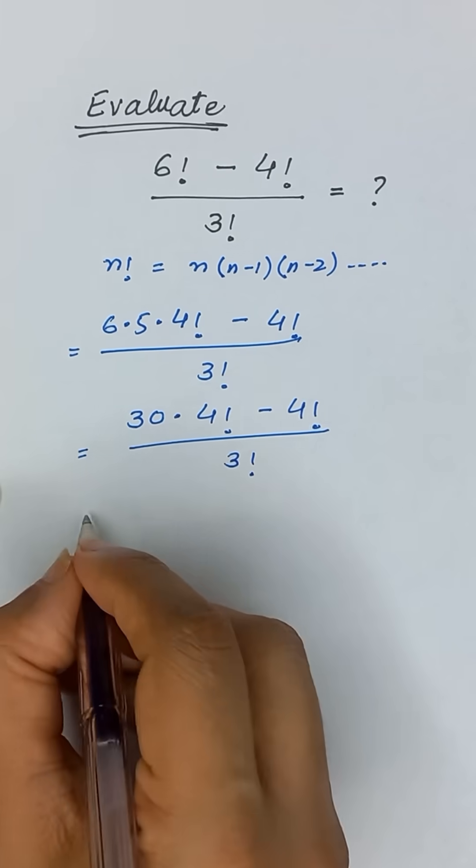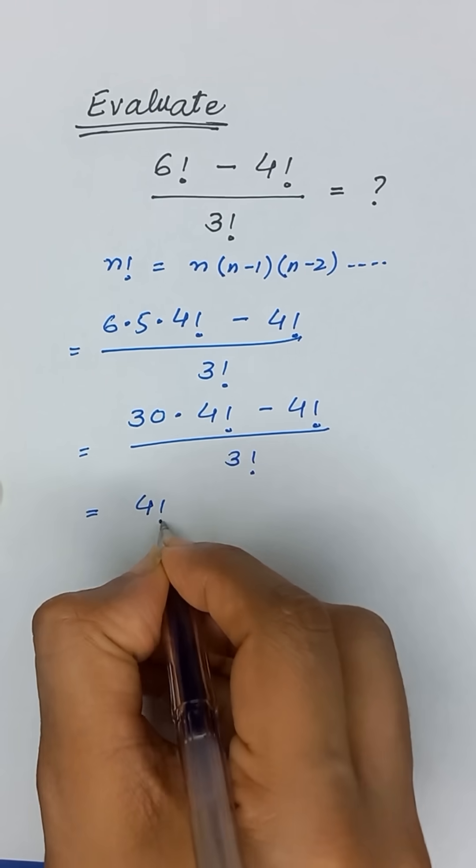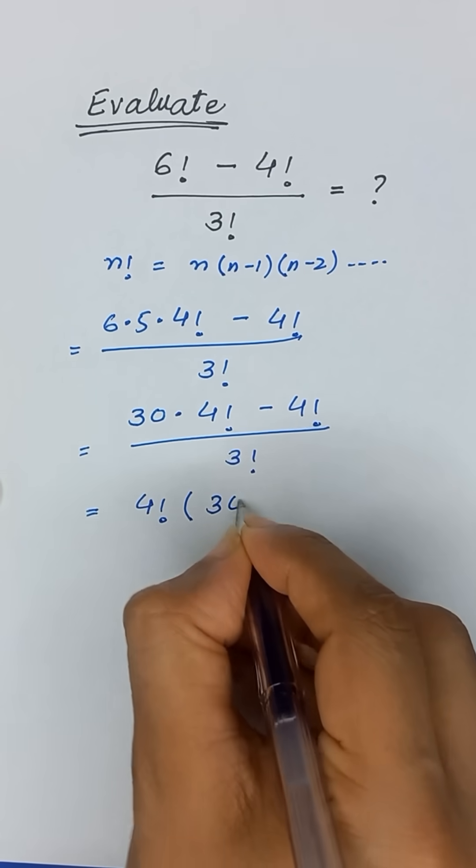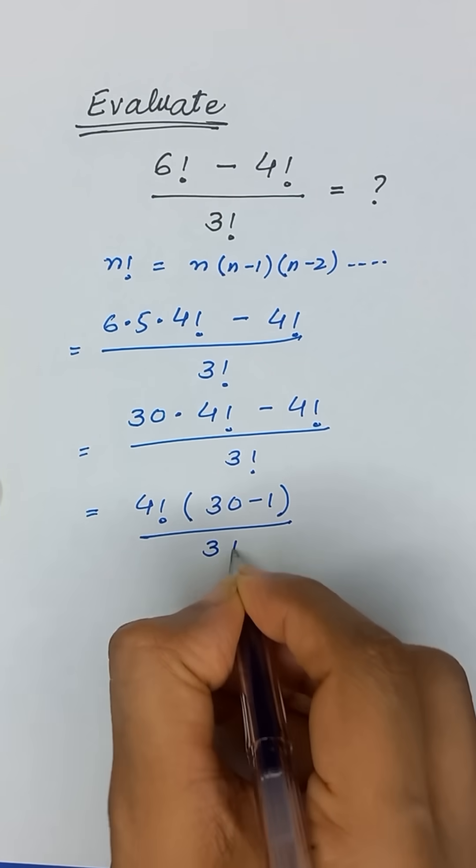Here we have 4 factorial is common. It will become 4 factorial times 30 minus 1 divided by 3 factorial.